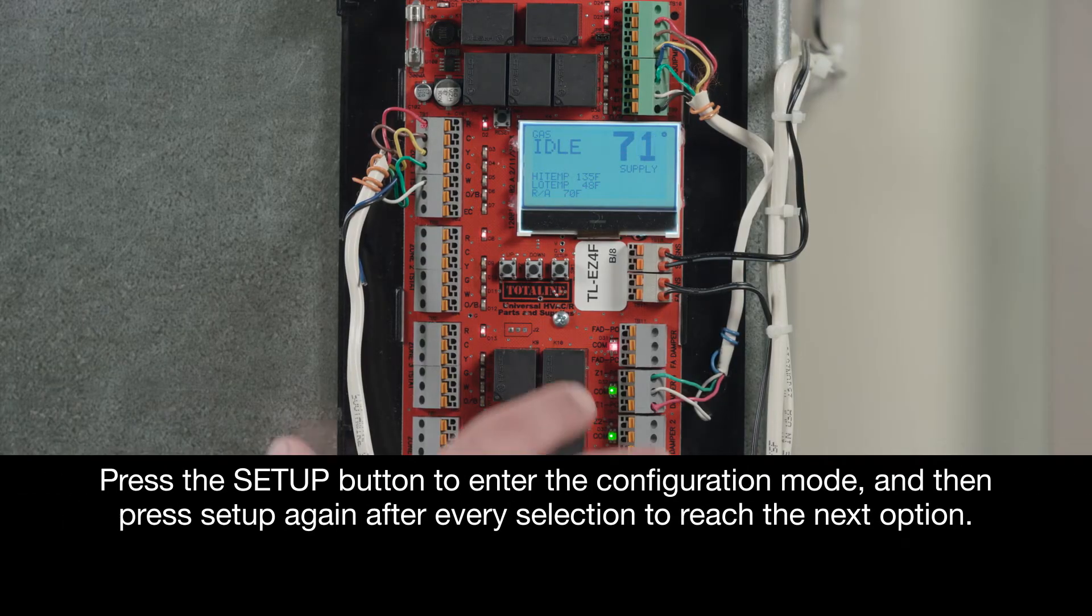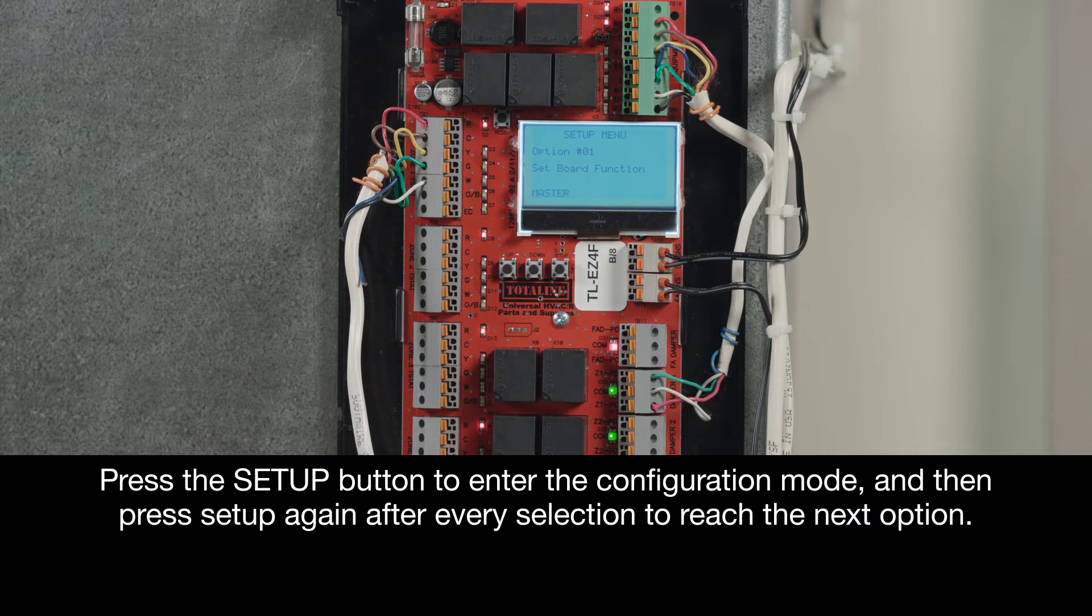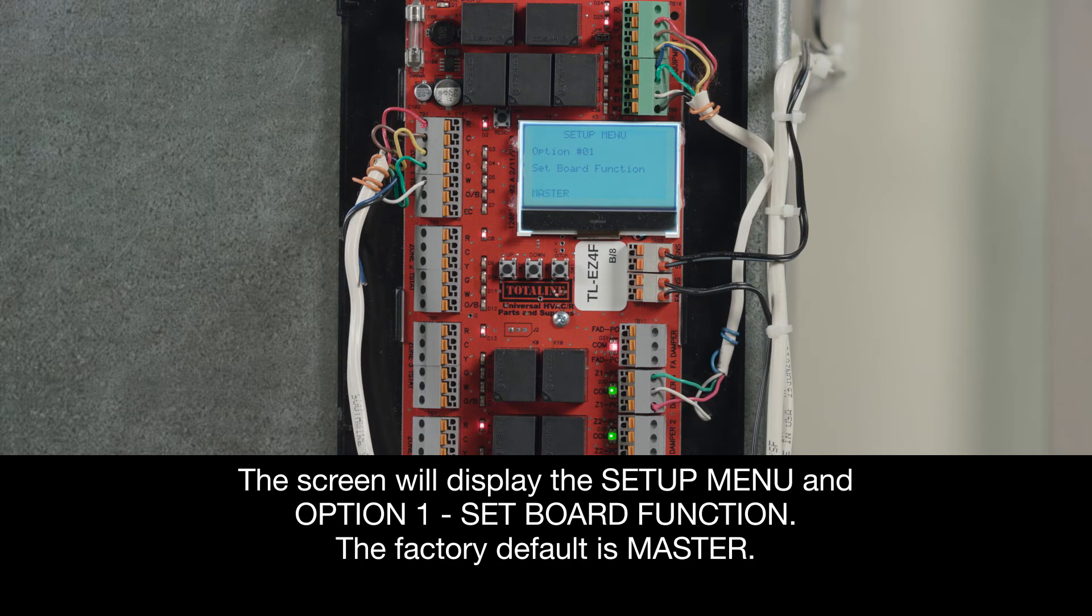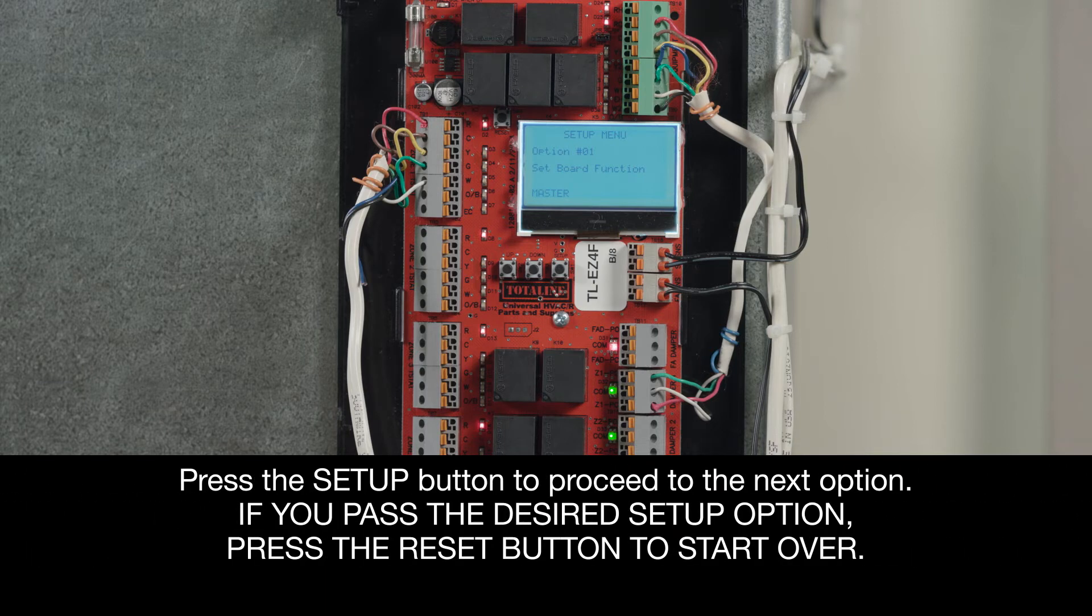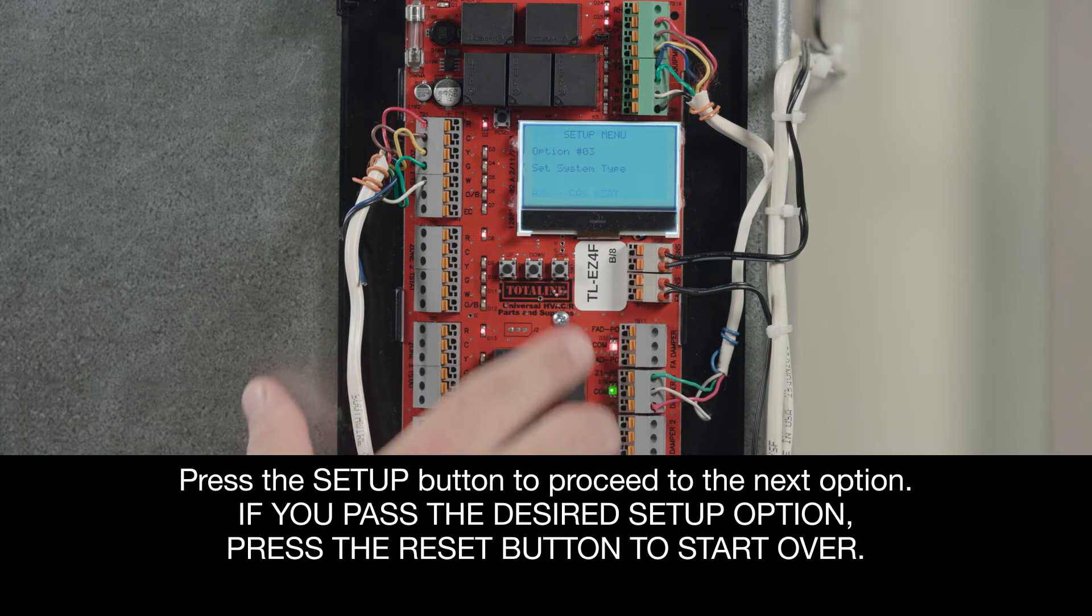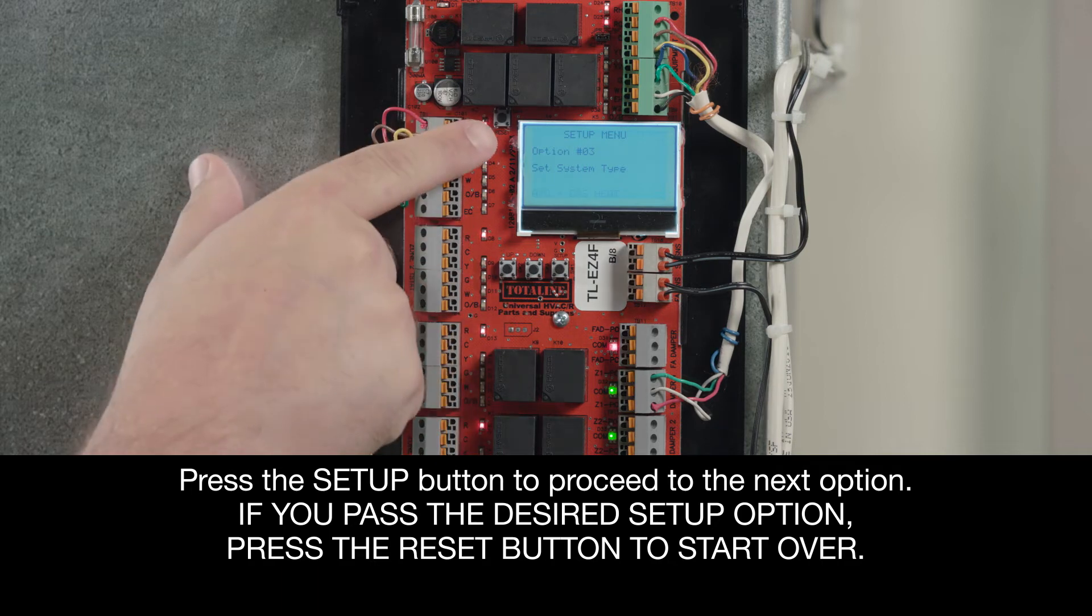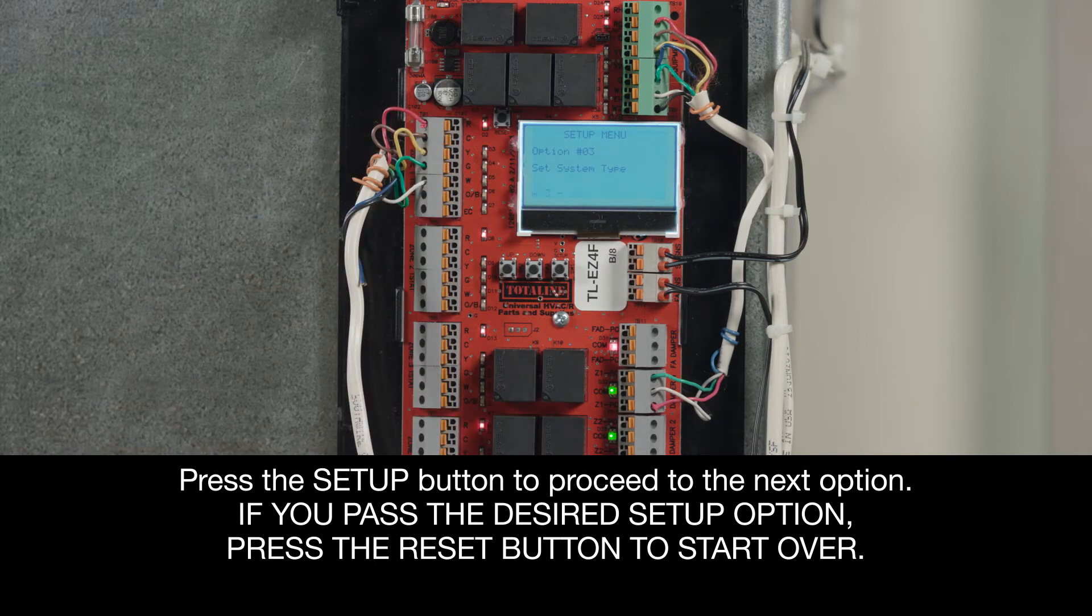Press the Setup button to enter the configuration mode, and then press Setup again after every selection to reach the next option. The screen will display the Setup menu and Option 1, Set Forward function. The factory default is Master. Again, press the Setup button to proceed to the next option. If you go past the desired Setup option, press the Reset button to start over.